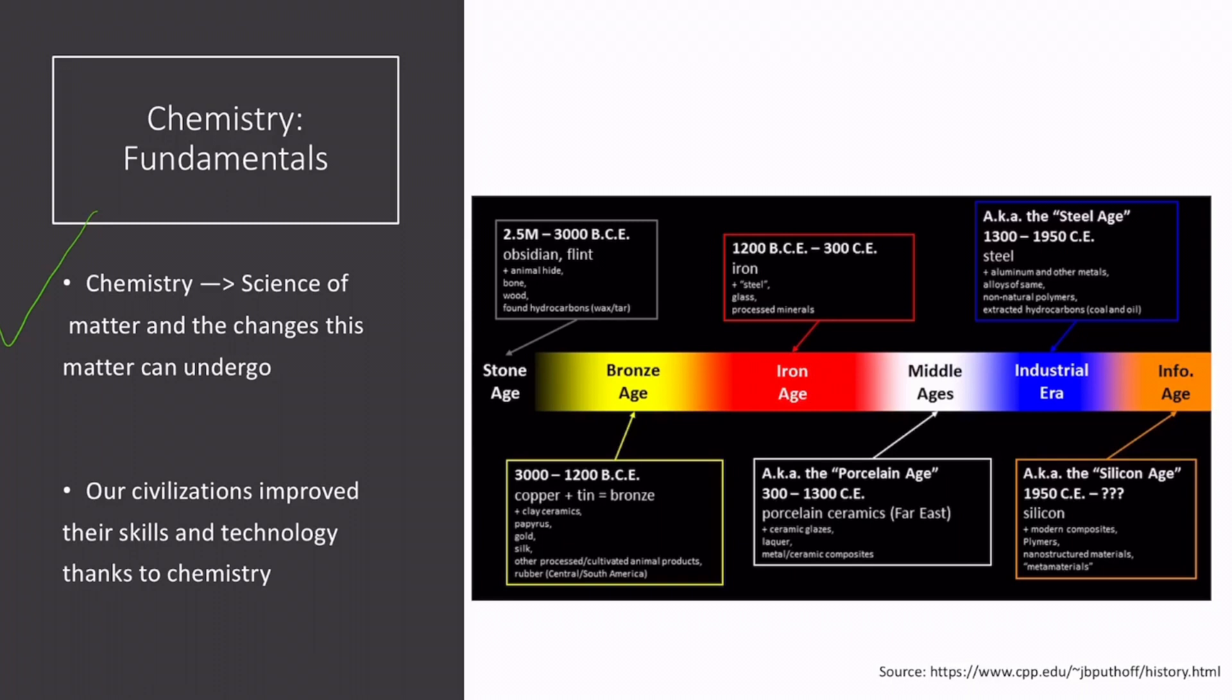The discovery and development of materials have been so important that they define our timeline. In the figure here, we can see that the Stone Age, the Bronze Age, and the Iron Age are all named after materials. During these times, tools were developed for hunting, building homes, and cooking. As time went on, more durable and malleable materials were discovered. Out of these three, Iron is the best.